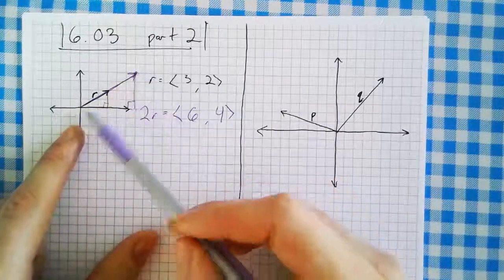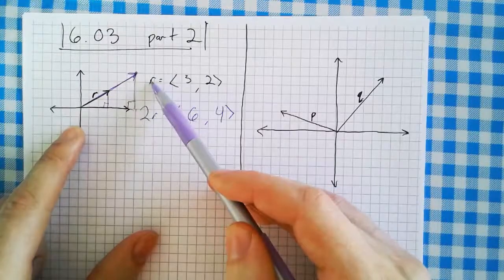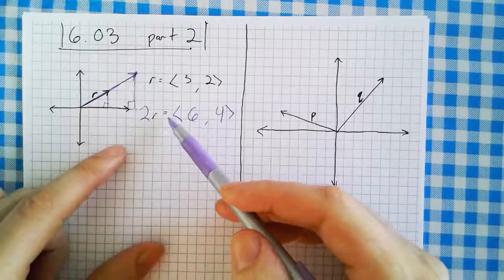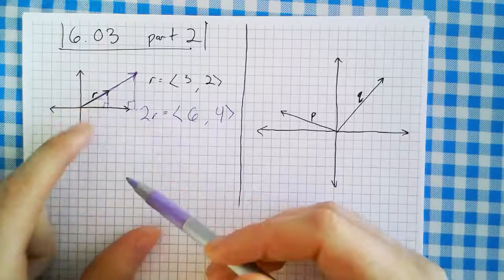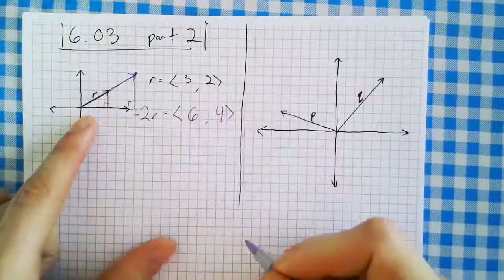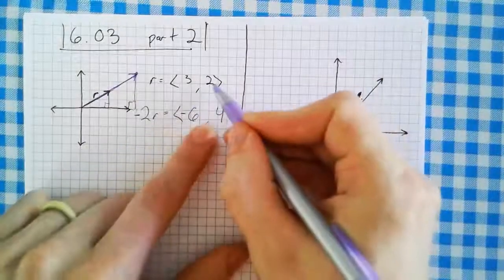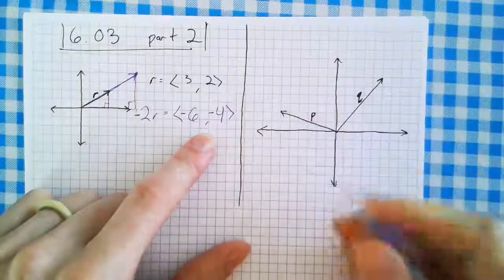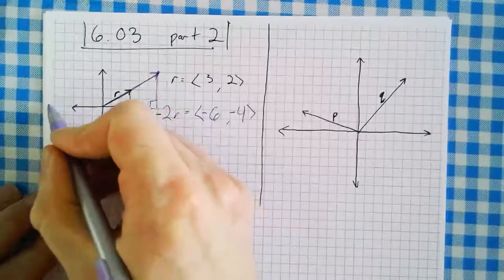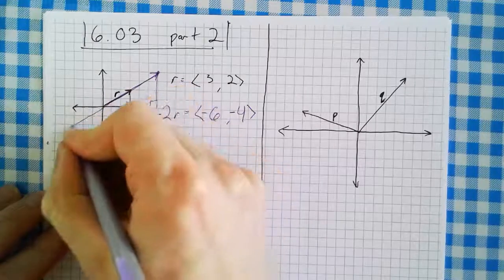That just scales our vector up or down. If I wanted to make my vector smaller, I'd multiply by a number smaller than one — that shrinks the vector. What if we multiplied by negative 2? Negative 2 times 3 gives negative 6, and negative 2 times 2 gives negative 4. Now the vector goes back the other way: negative 6 in x and negative 4 in y — it's literally the opposite vector.